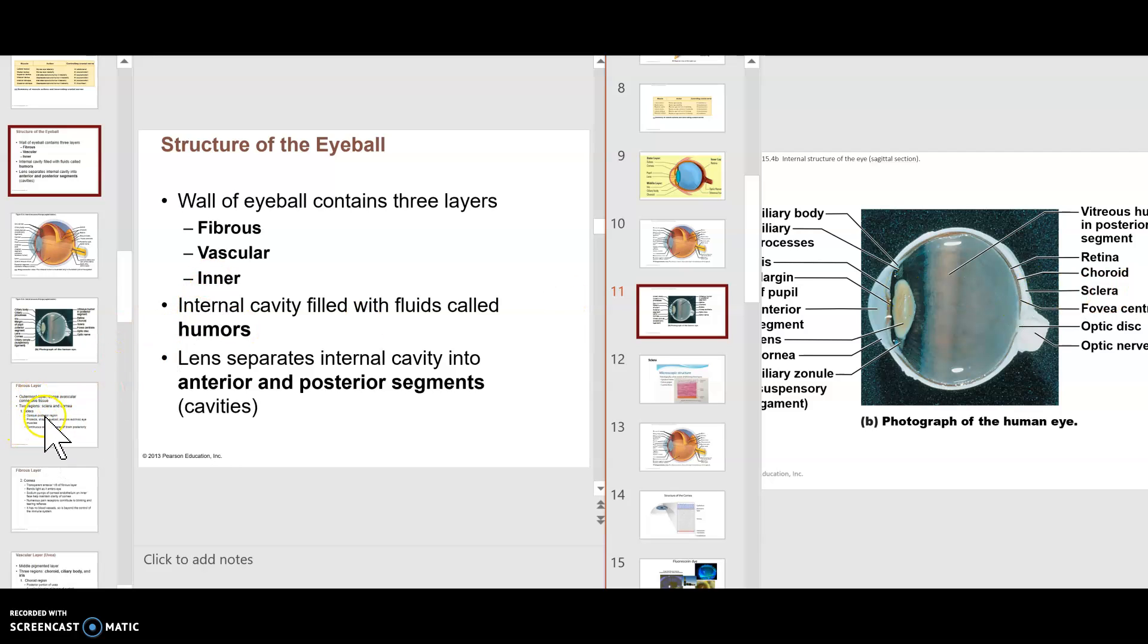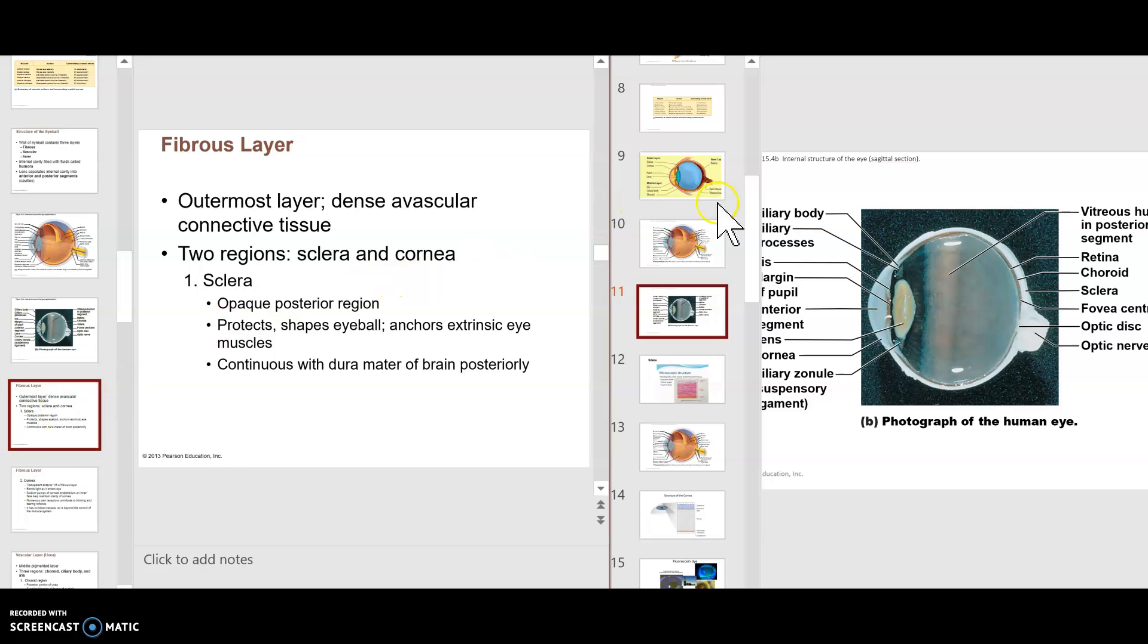So we're going to start first with the fibrous layer. With the fibrous layer, you have the sclera, which is the whitish portion of the eye. It's an opaque posterior region. It's white, protects and shapes the eyeball, anchors the extrinsic eye muscles. Remember the superior oblique and lateral rectus, medial rectus, those there.